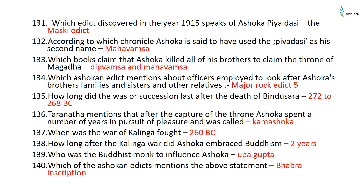The Maski edict discovered in 1915 speaks of Ashoka Priyadarshi. According to the Mahavamsa chronicle, Ashoka used Priyadarshi as his second name. The Dipavamsa and Mahavamsa claim that Ashoka killed all his brothers to claim the throne of Magadha. The war of succession after Bindusara's death lasted four years, from 272 to 268 BC.